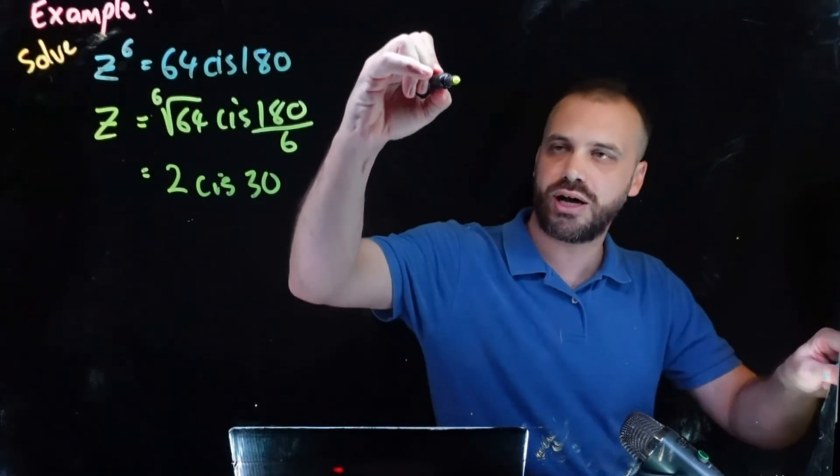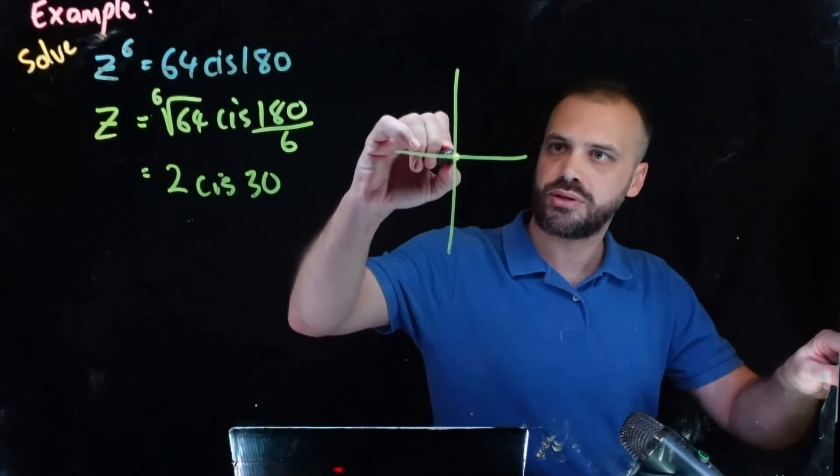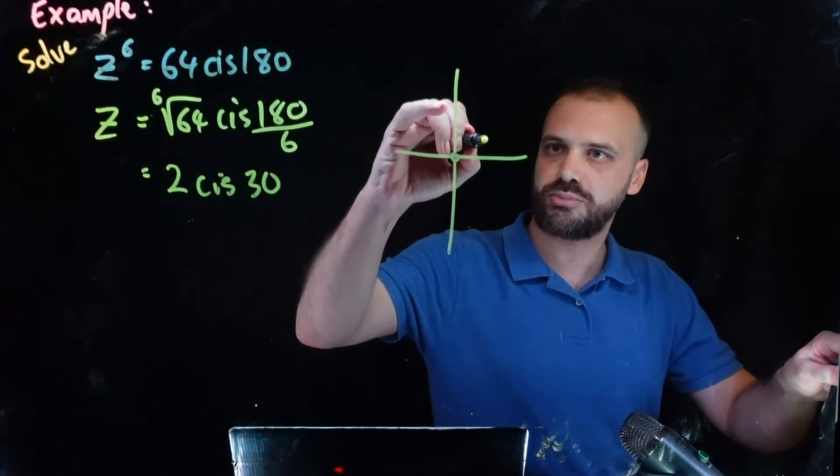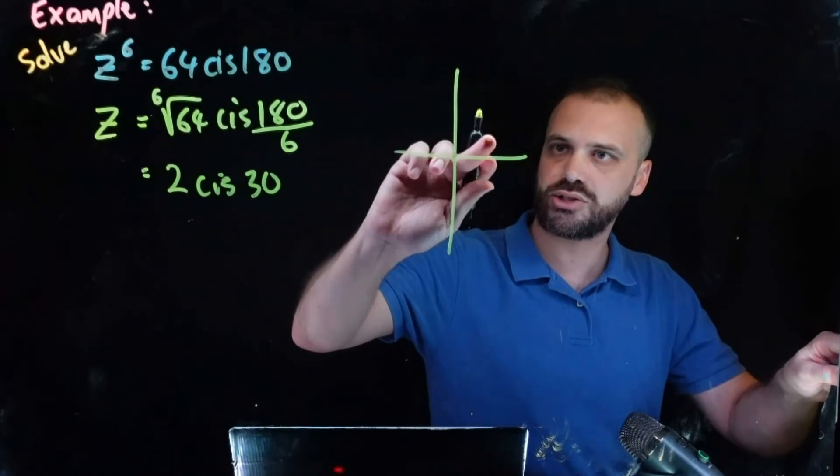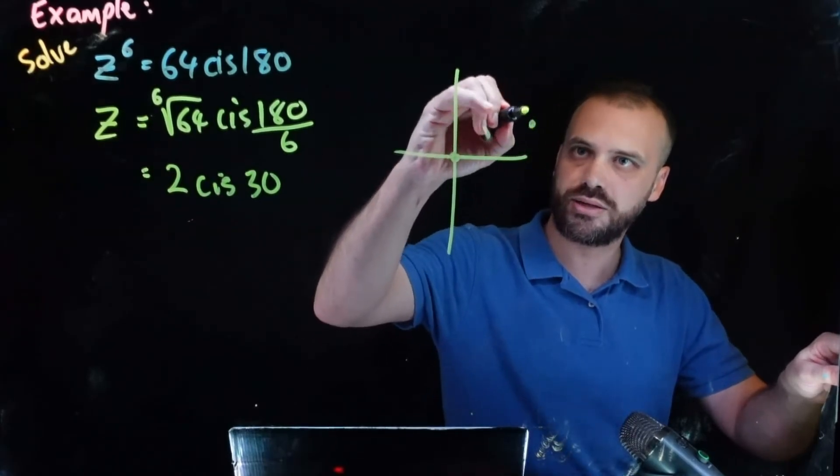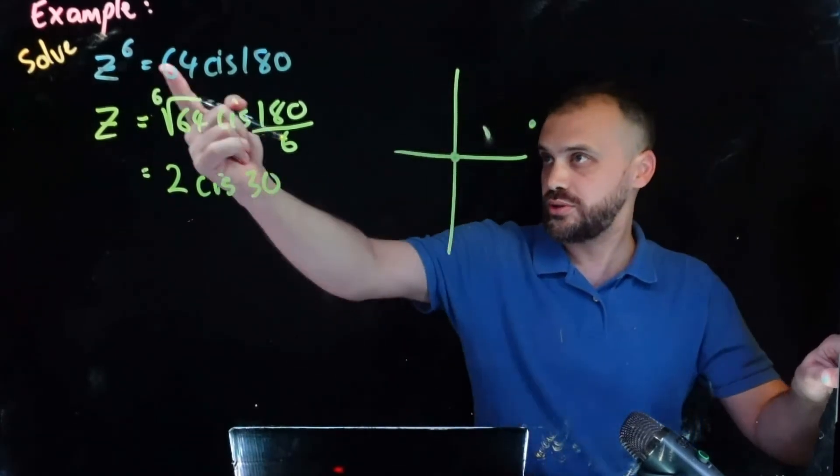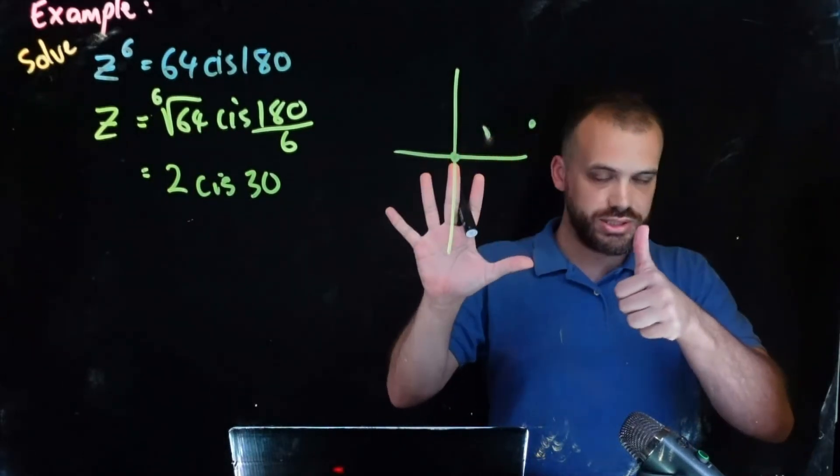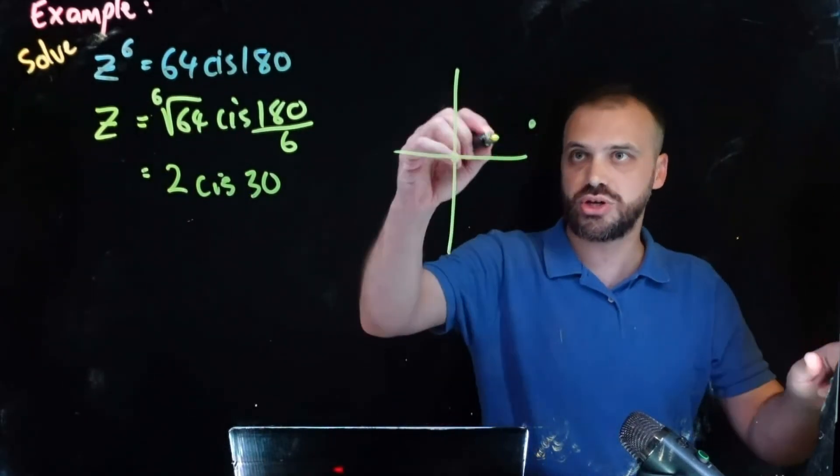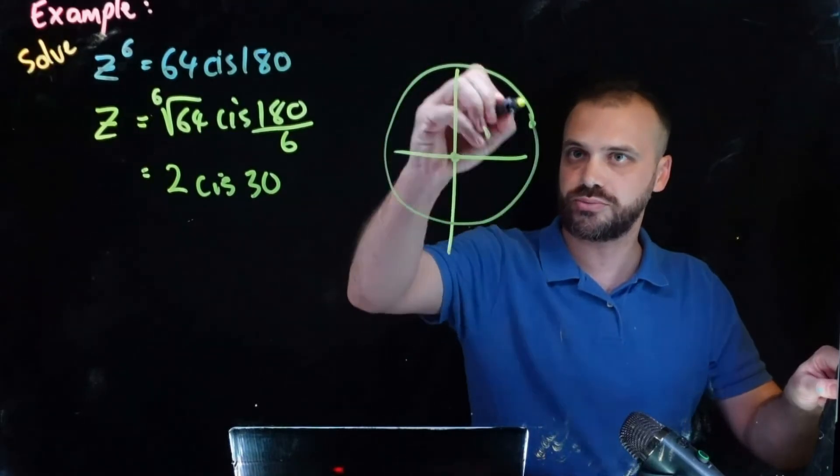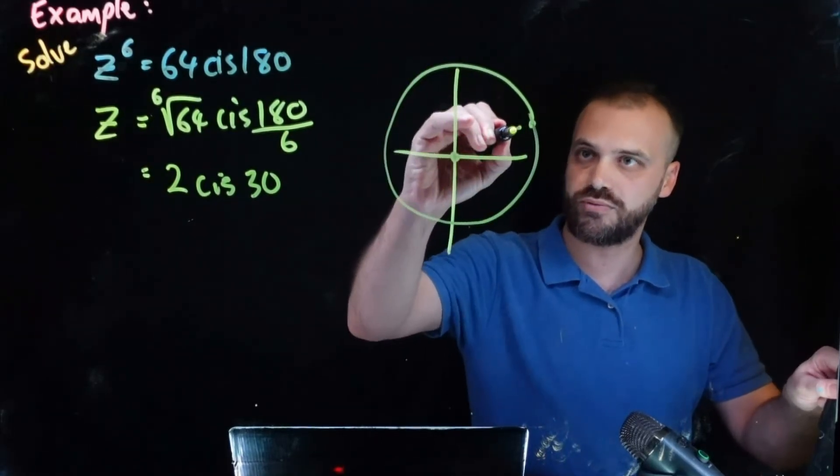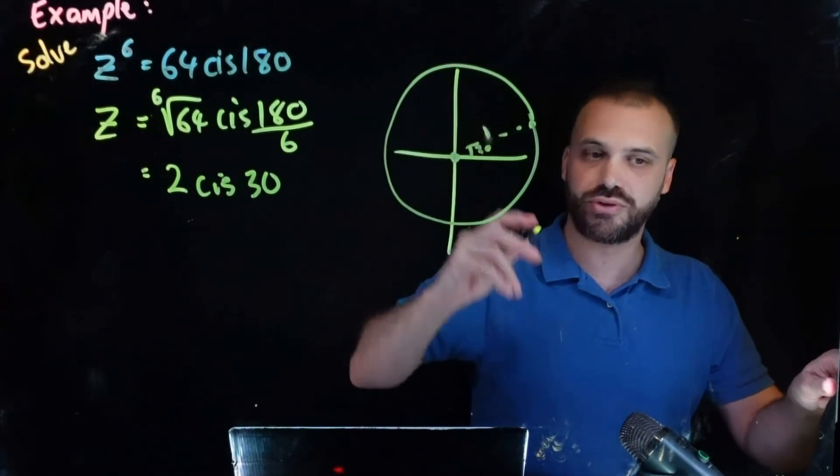So I'm going to draw that on an argand diagram. Cis 30 so about here and let's go big about here, and we know that because it's z to the 6th there's going to be six equally spaced solutions around a circle. Okay and there's one of our solutions, angle there of 30 degrees.